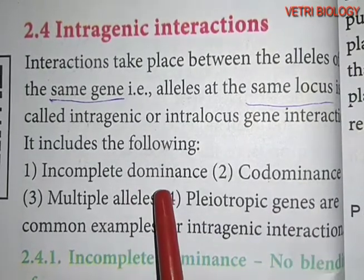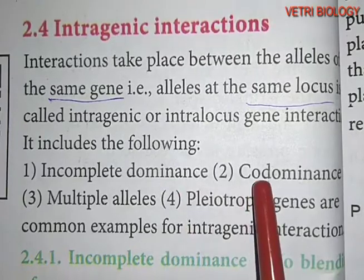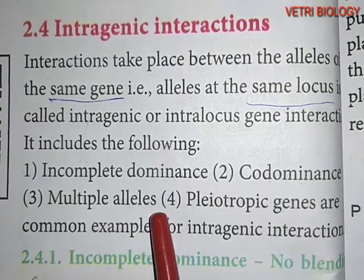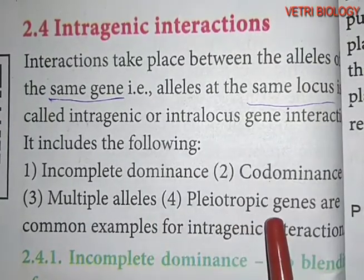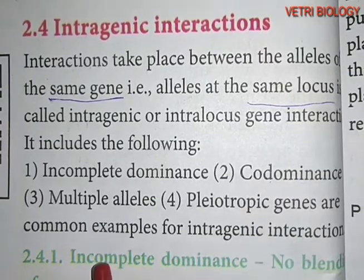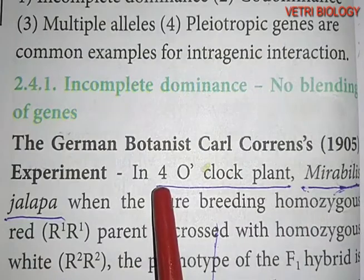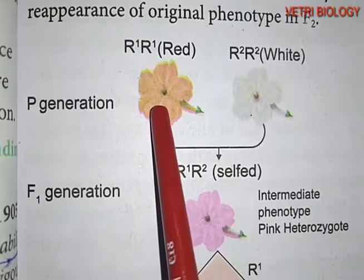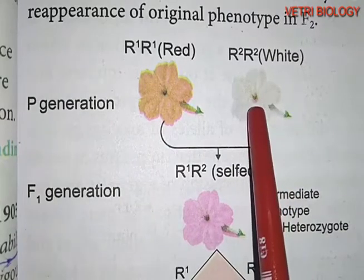Incomplete dominance means that both the dominant and the recessive characters are expressed. Co-dominance means that two characters are expressed simultaneously. This is the experiment of German botanist Karl Correns. He performed experiments on the 4 o'clock plant, Mirabilis jalapa. He crossed a pure breeding red color flower-bearing plant with a pure breeding white color flower-bearing plant.